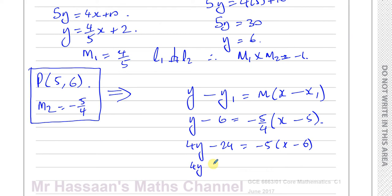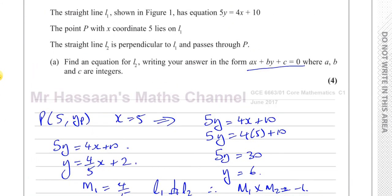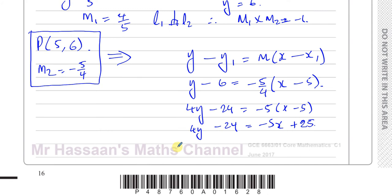Now let's expand this bracket to distribute that negative 5. So 4y minus 24 equals negative 5x plus 25. Minus 5 times minus 5 is plus 25. And now I can express it in the form I want, which is ax plus by plus c equals 0. So let me add 5x to both sides. So this will say 5x plus 4y. And I've got negative 24 take away 25 is going to be minus 49 equals 0. And there I have the answer to part A.